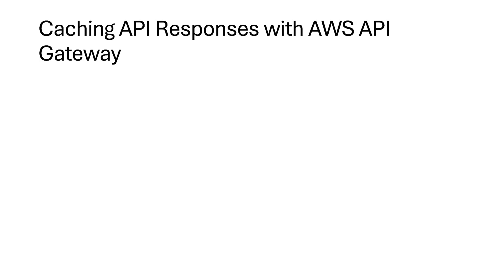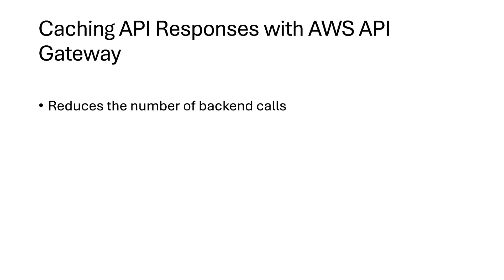First off, let's talk about why caching is important. Caching reduces the number of calls made to the backend by storing responses for a specified amount of time. This not only improves the speed of your API but also reduces the load on the backend services. So that was the advantage of using caching.